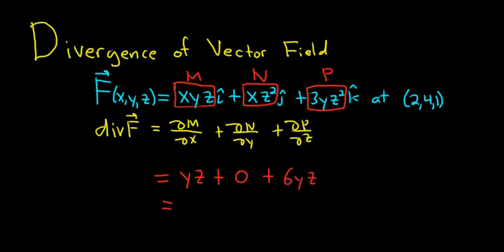So the divergence of this vector field is 7YZ. So we want the divergence when we are at the point XYZ, so we're at 2, 4, 1.